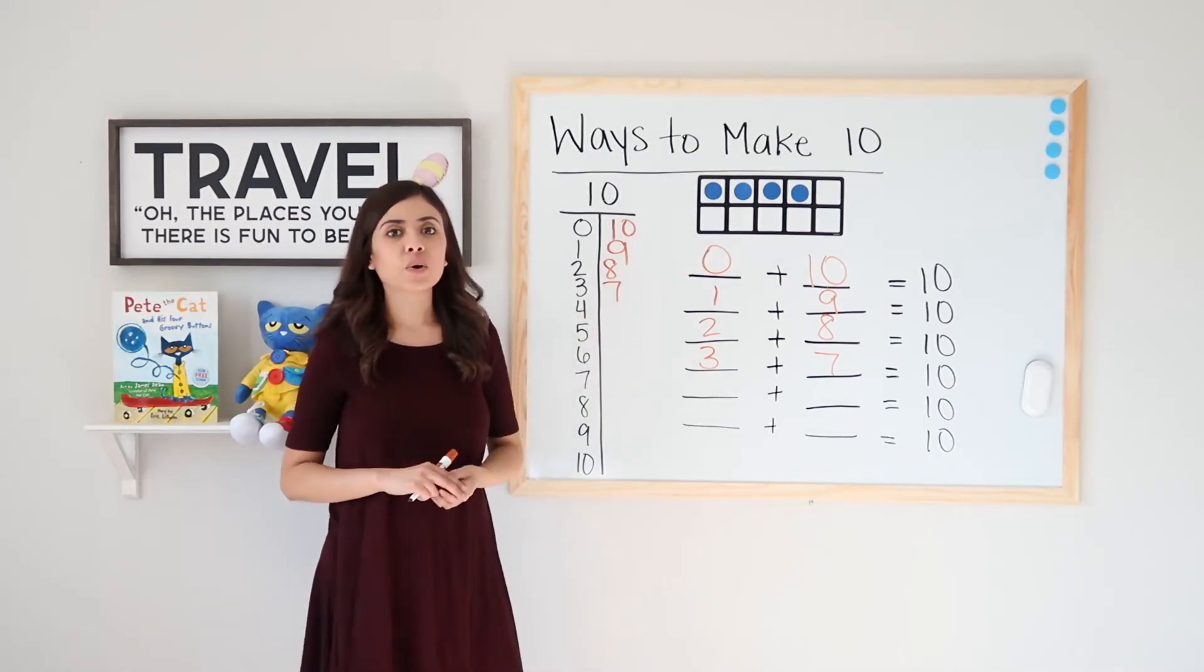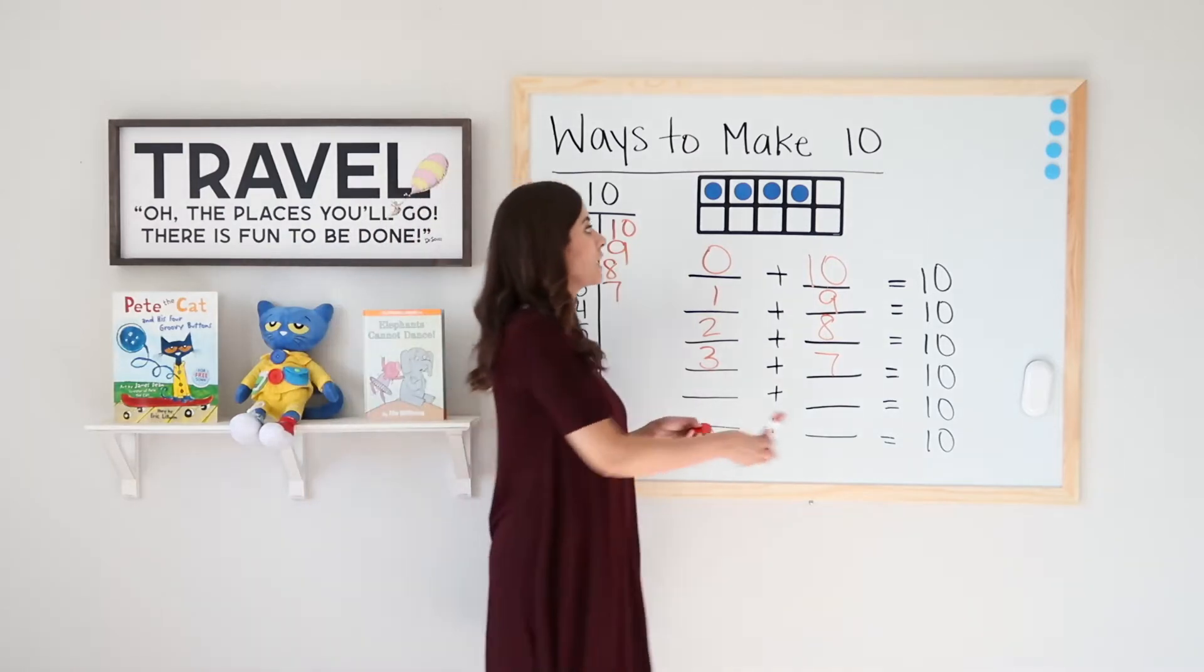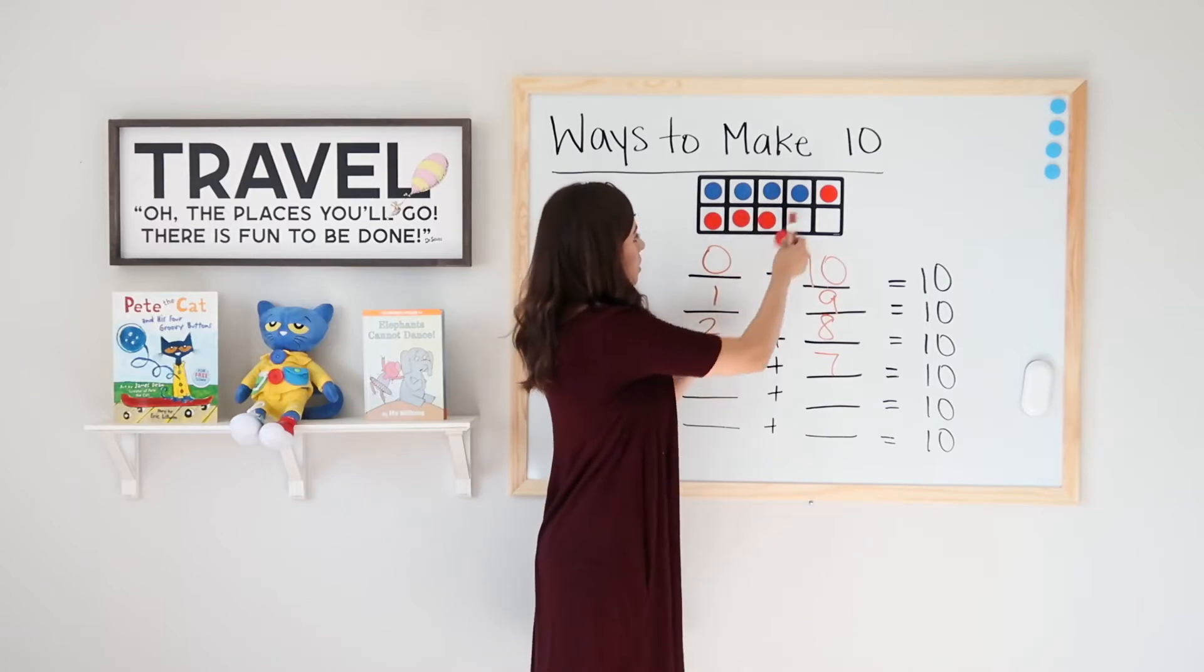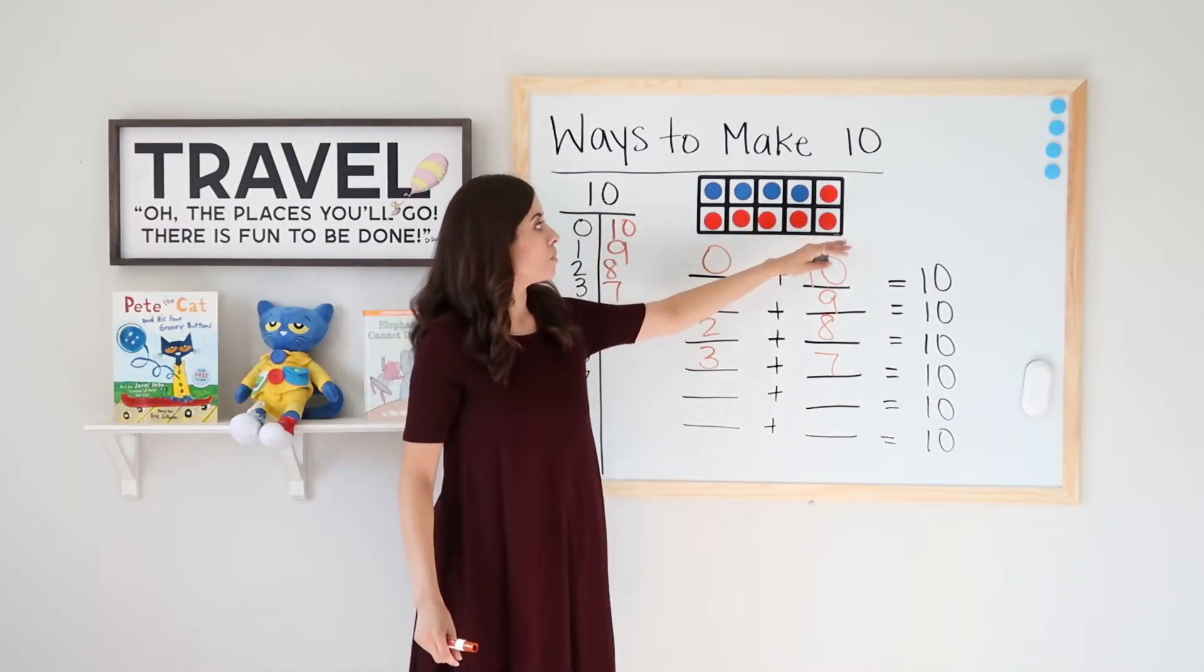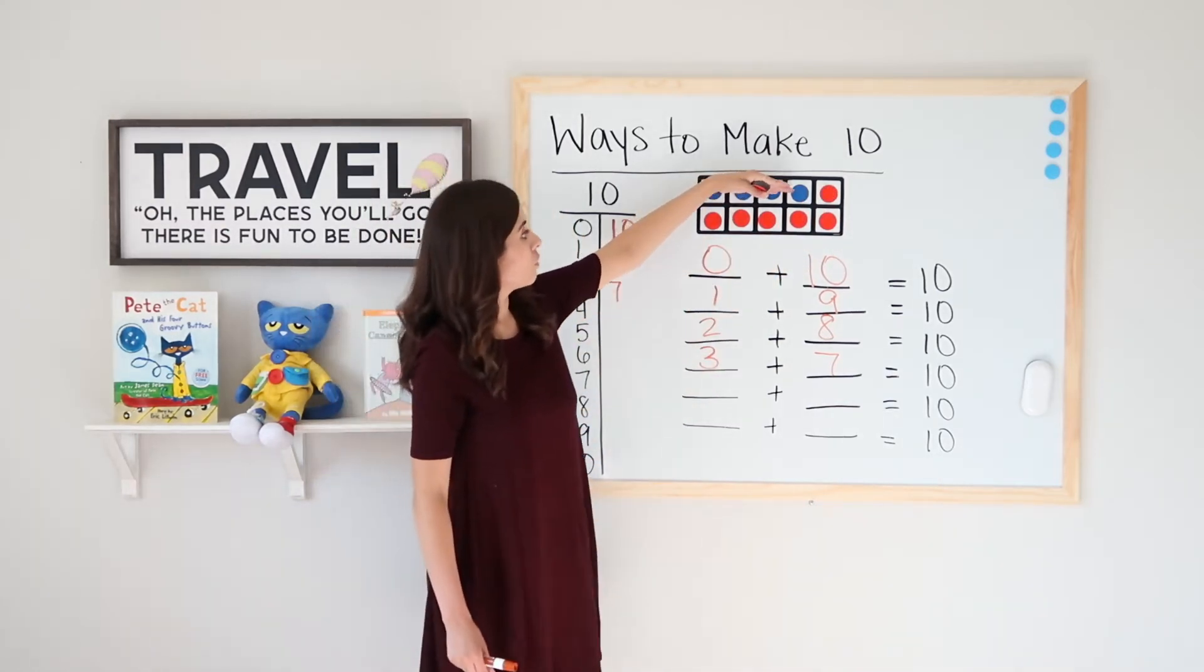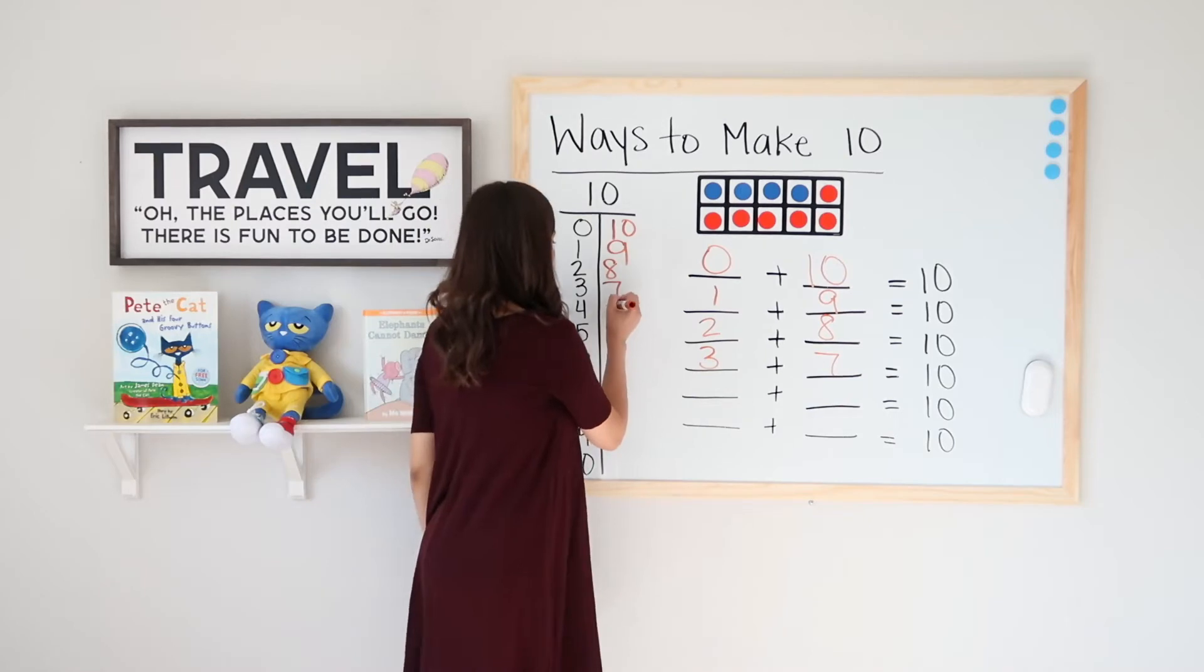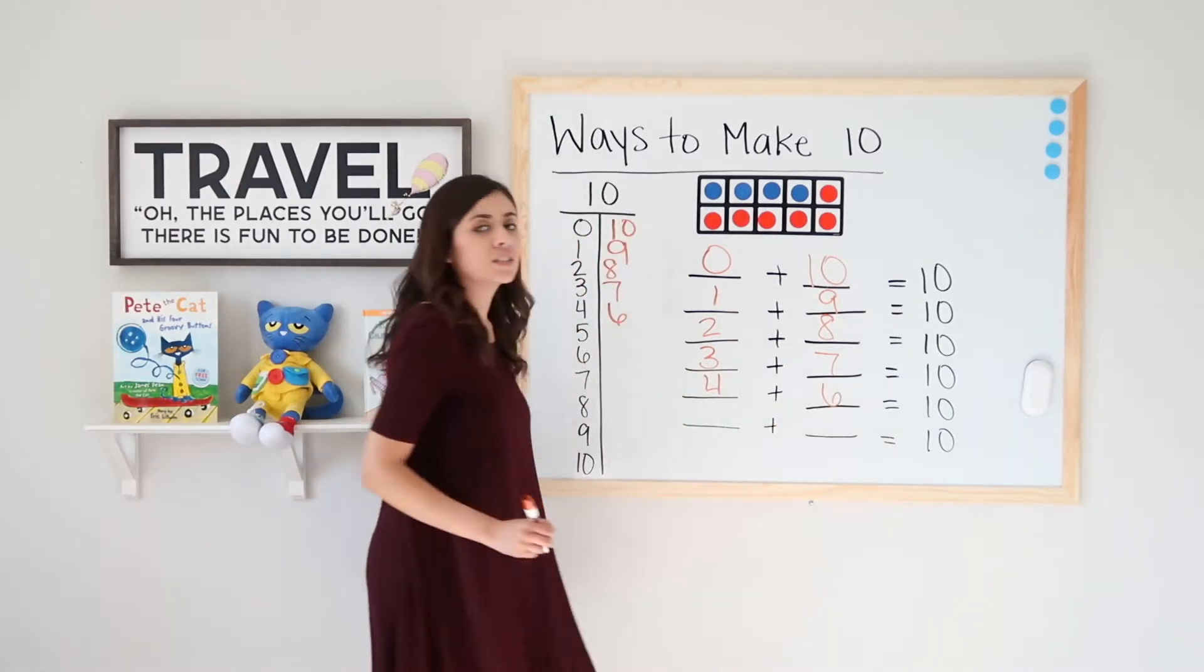Four blue dots. Let's go ahead and fill the rest of our 10 frame with red and see how many red I needed to get to ten. So I have five at the bottom plus one more. Five, six. That means that four blue plus six red equals ten. So that means four plus six equals ten.